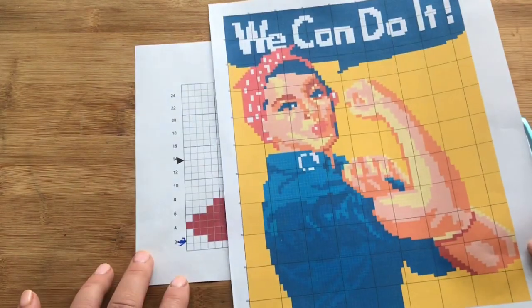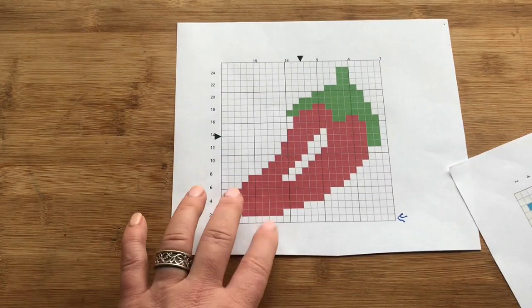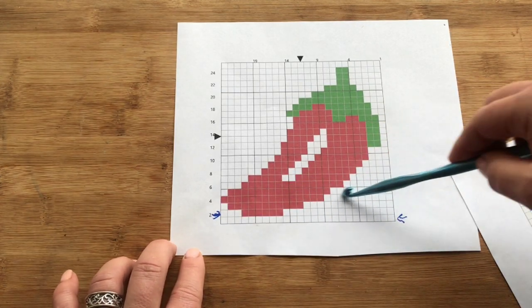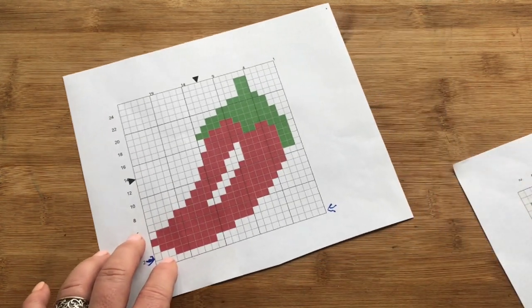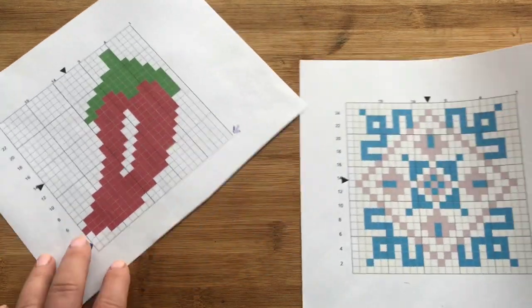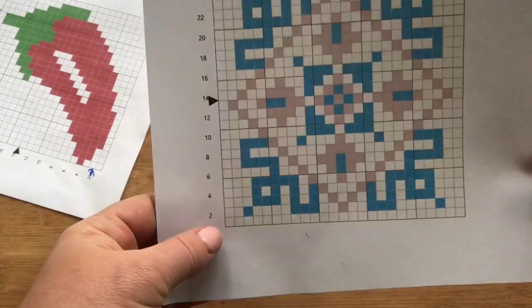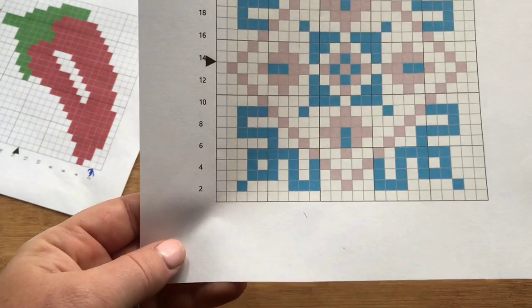You can work it from bottom to top, top to bottom, left to right, right to left. Other graphs are not symmetrical like this one and also like this one. So these are best to work directionally and mark off your rows as you work.